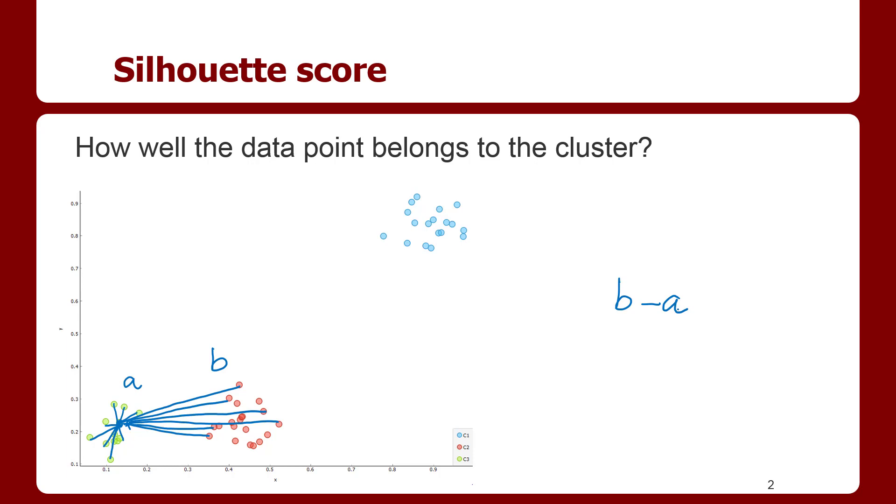To normalize this value, we have to divide this by the maximum of B and A. This is called the silhouette score.